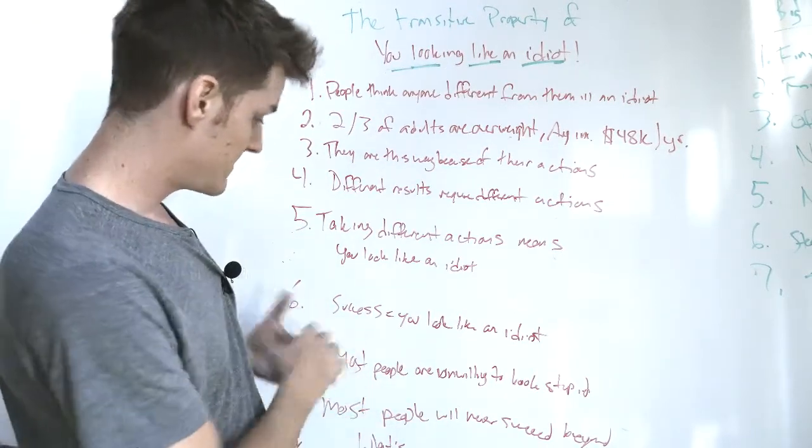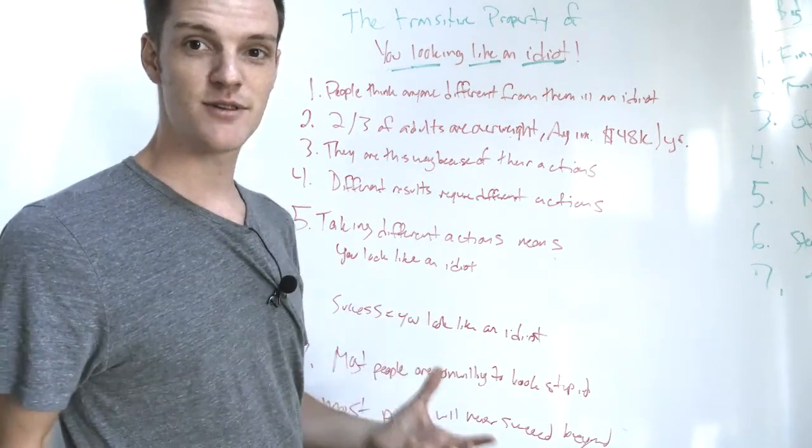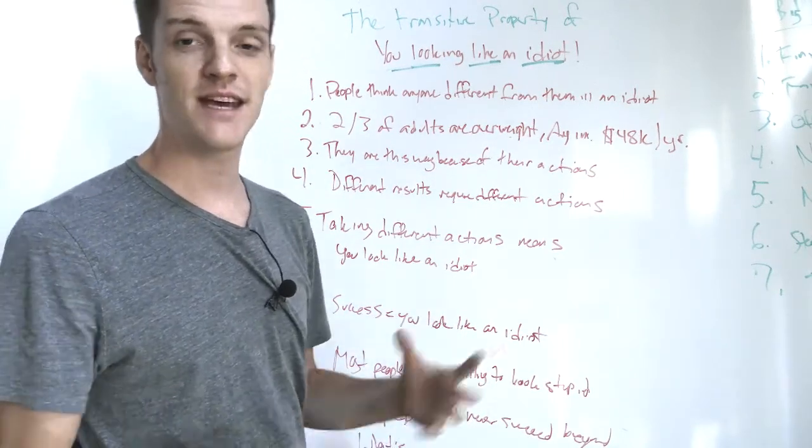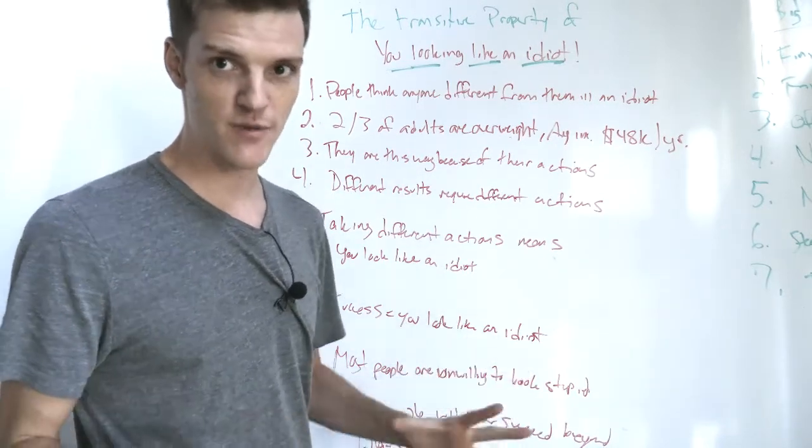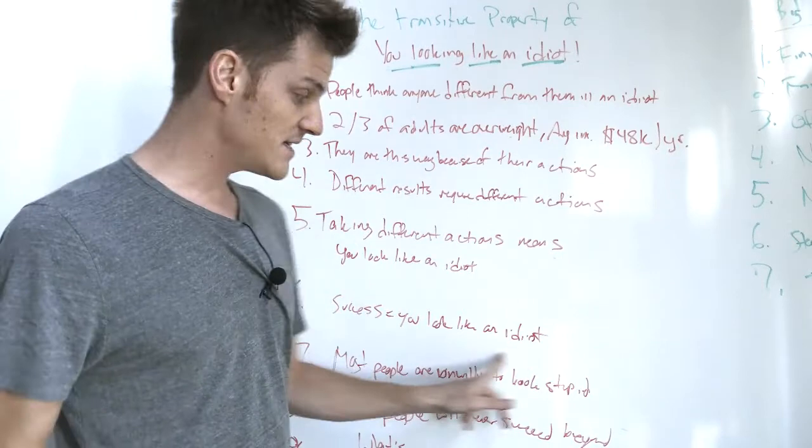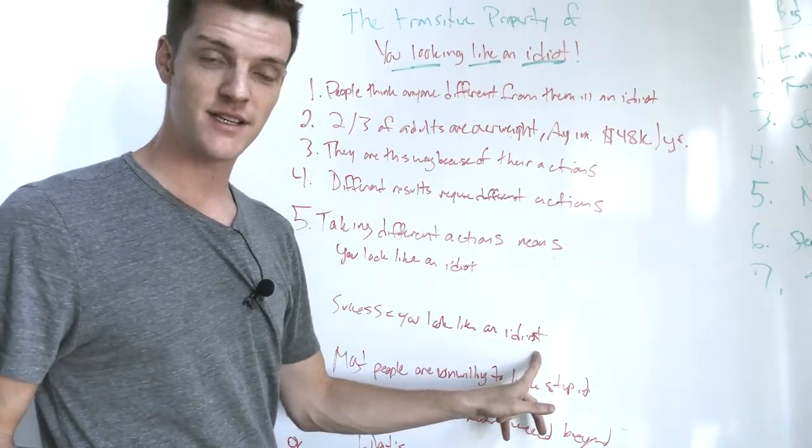Number six, in conclusion, success equals you look like an idiot. You acting and behaving and believing things differently than almost everybody else that you are surrounded by. But you must be willing to look like an idiot if you would like to succeed.